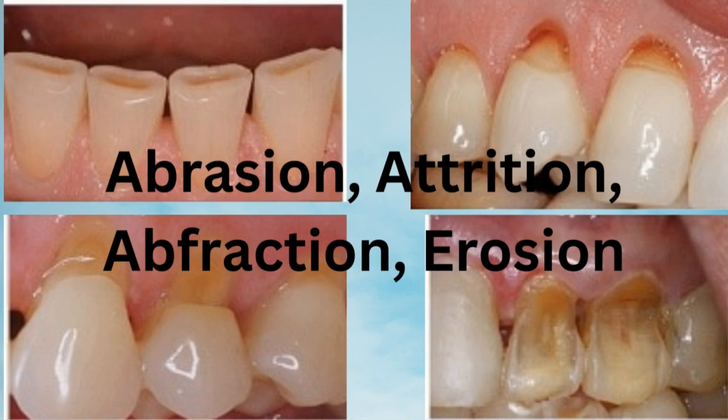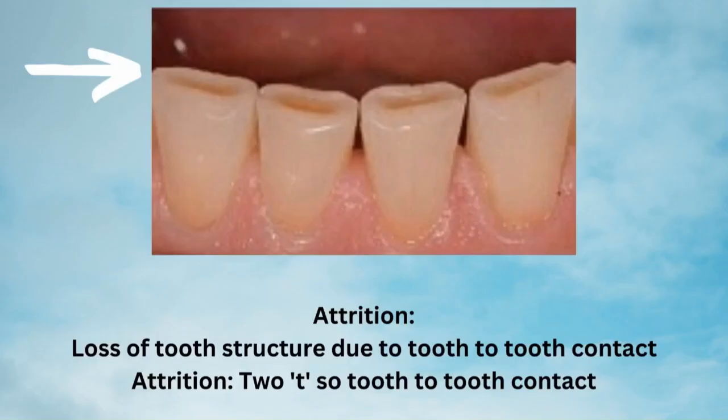Starting with attrition — it is defined as loss of tooth structure due to tooth-to-tooth contact. From its name, attrition involves two teeth, so it is tooth-to-tooth contact.